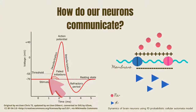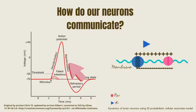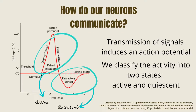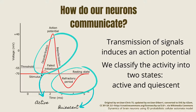At rest, a neuron's membrane potential measures a negative voltage, so that the inputs cause the membrane to depolarize or repolarize until it goes back to its initial state. Action potentials are triggered when enough depolarization accumulates to bring the membrane potential up to threshold.